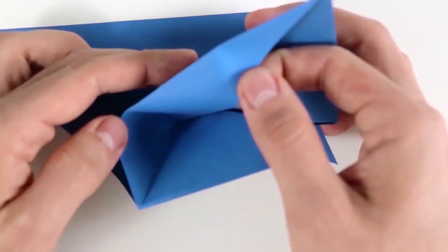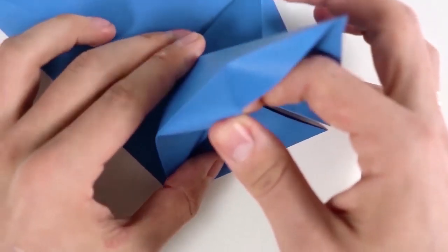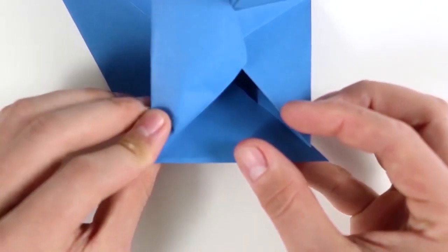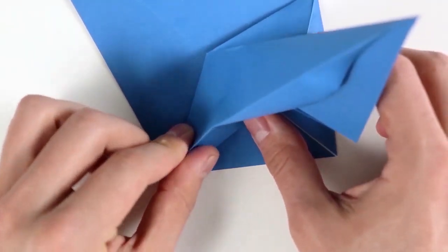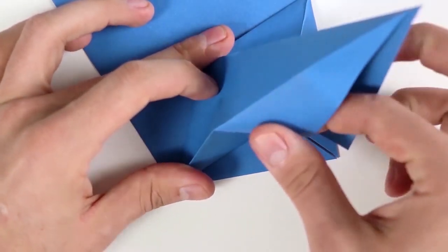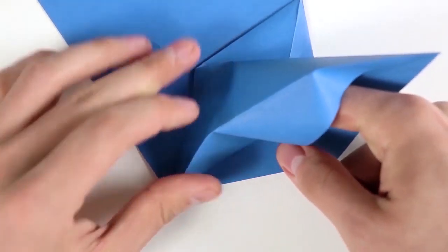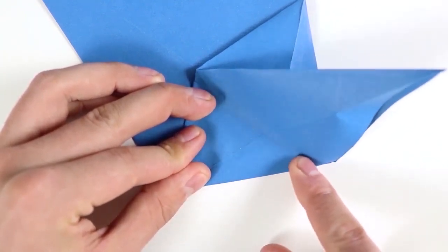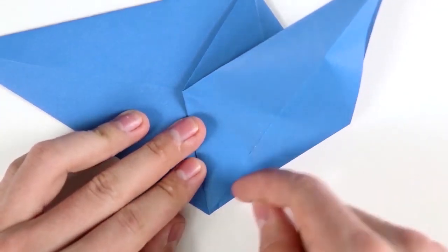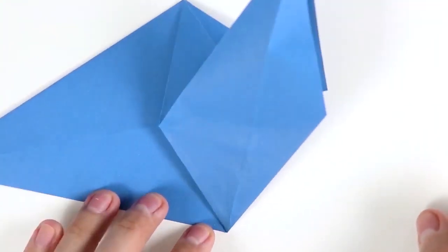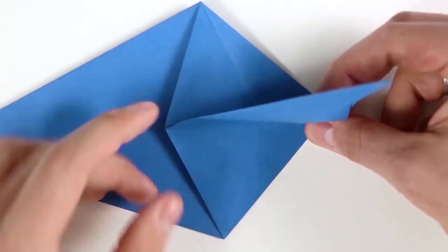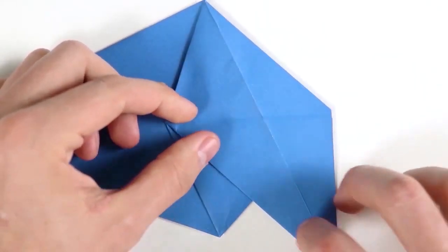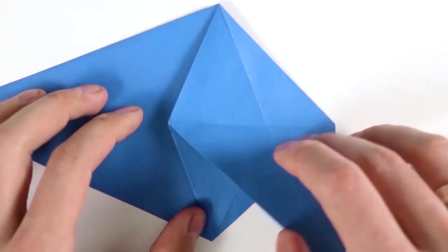First open the layer. And flatten the paper, shaping the new edge. Bring it to the side. And the most difficult step is done. Now it's much easier. Rotate.